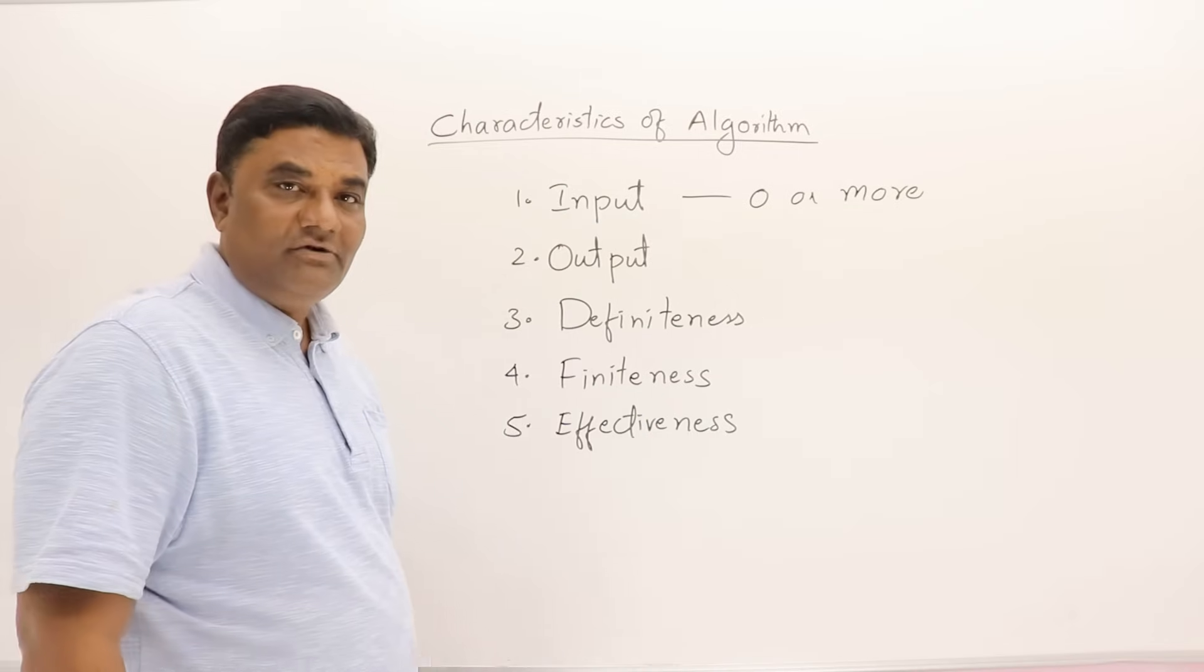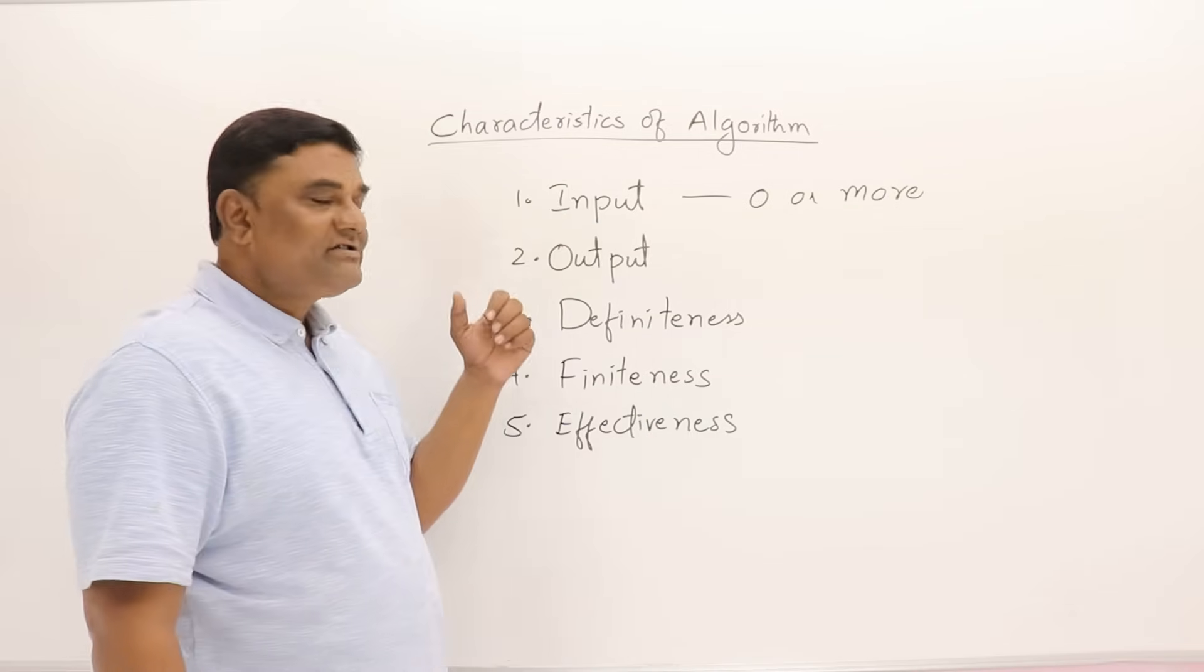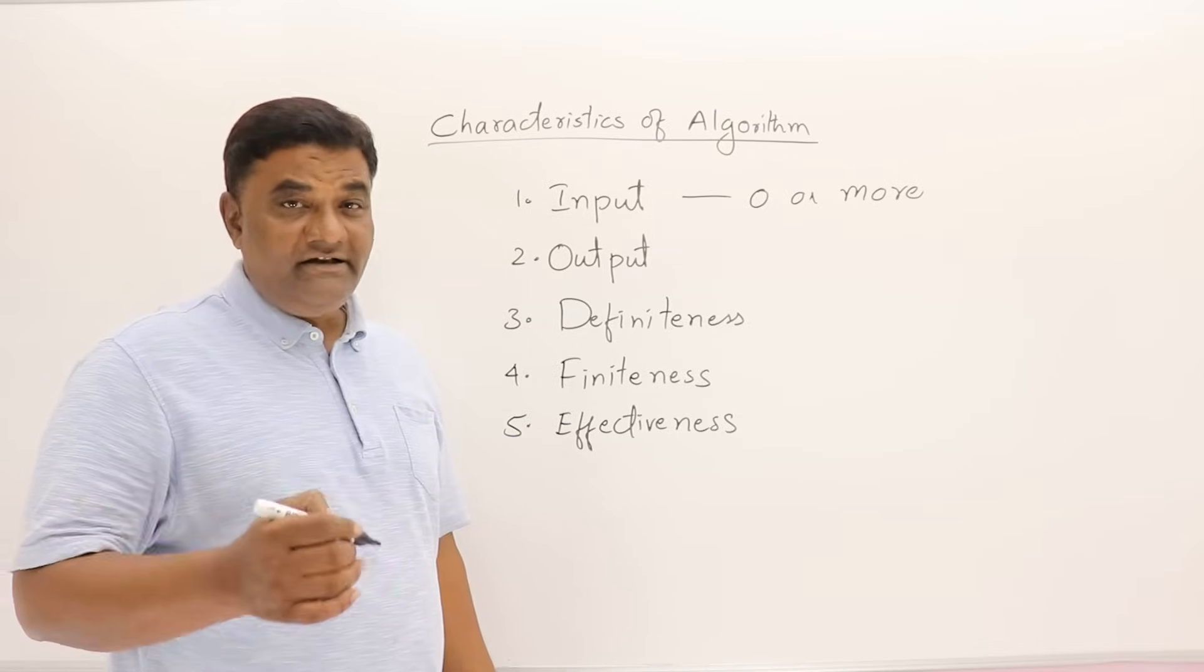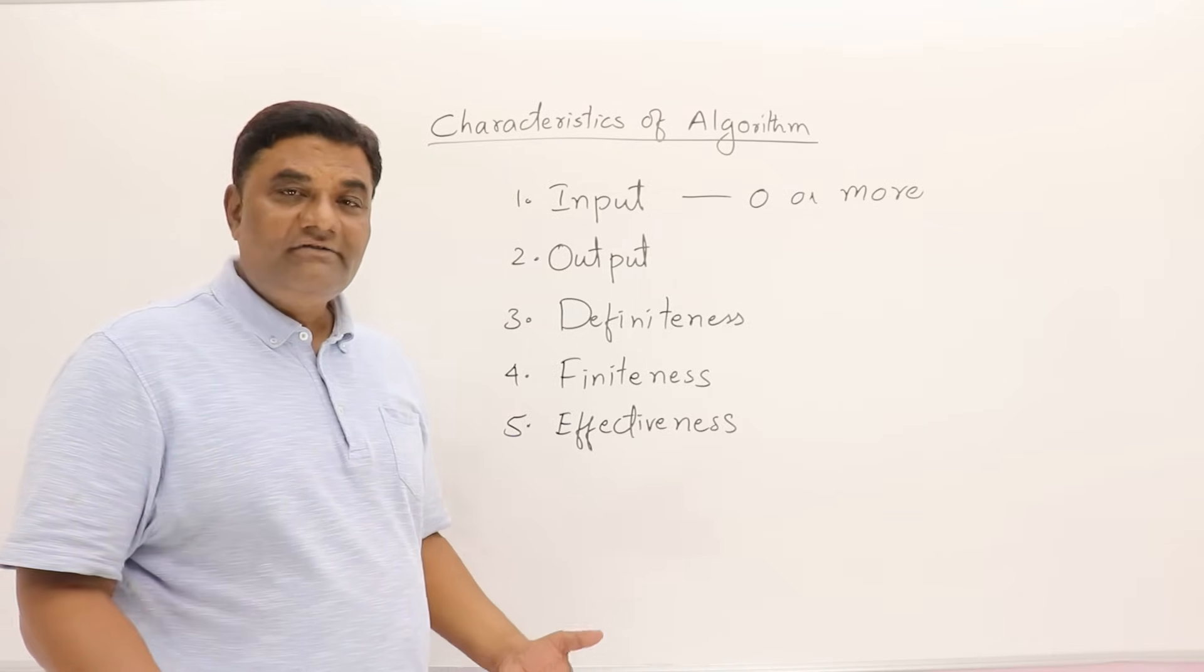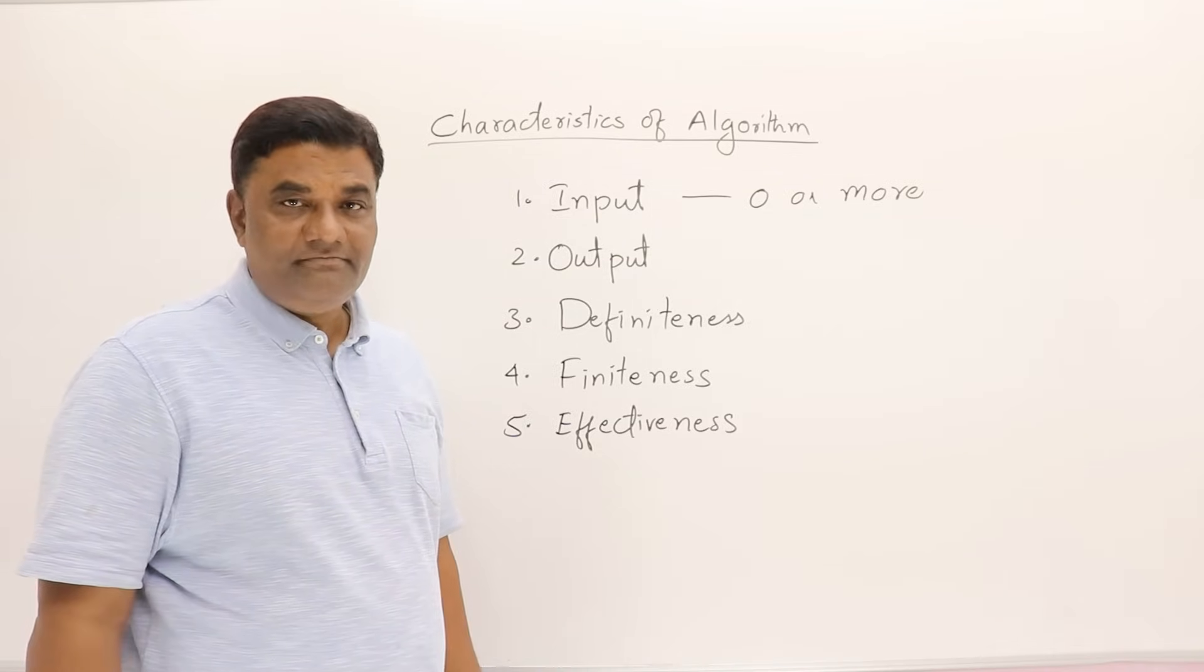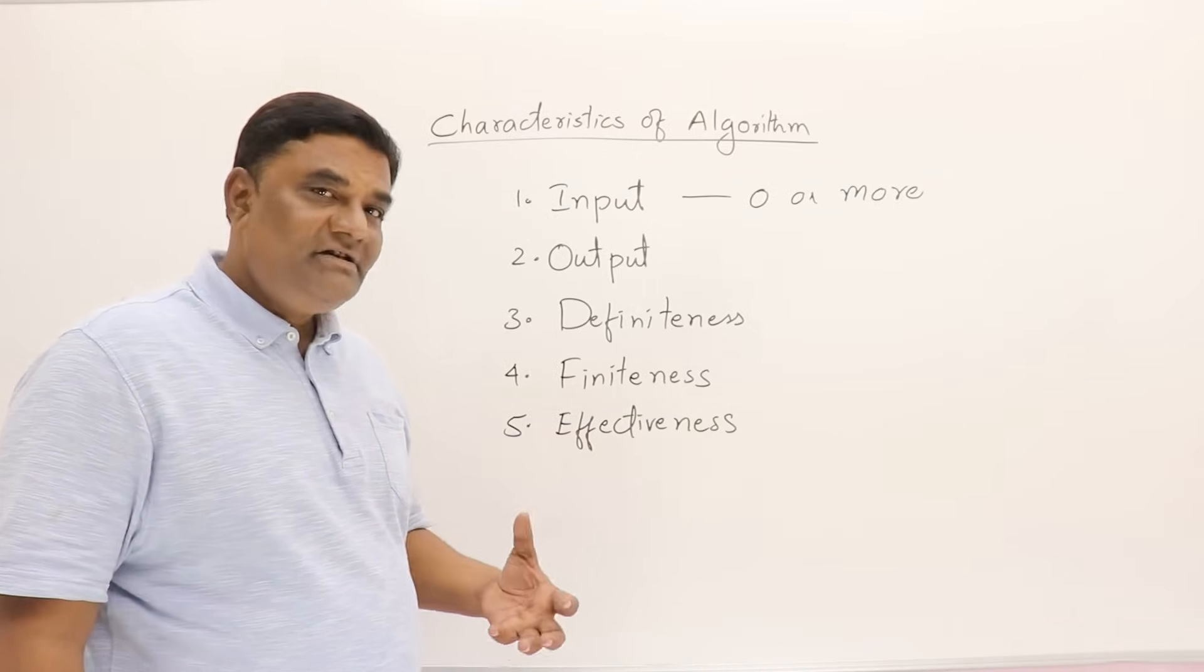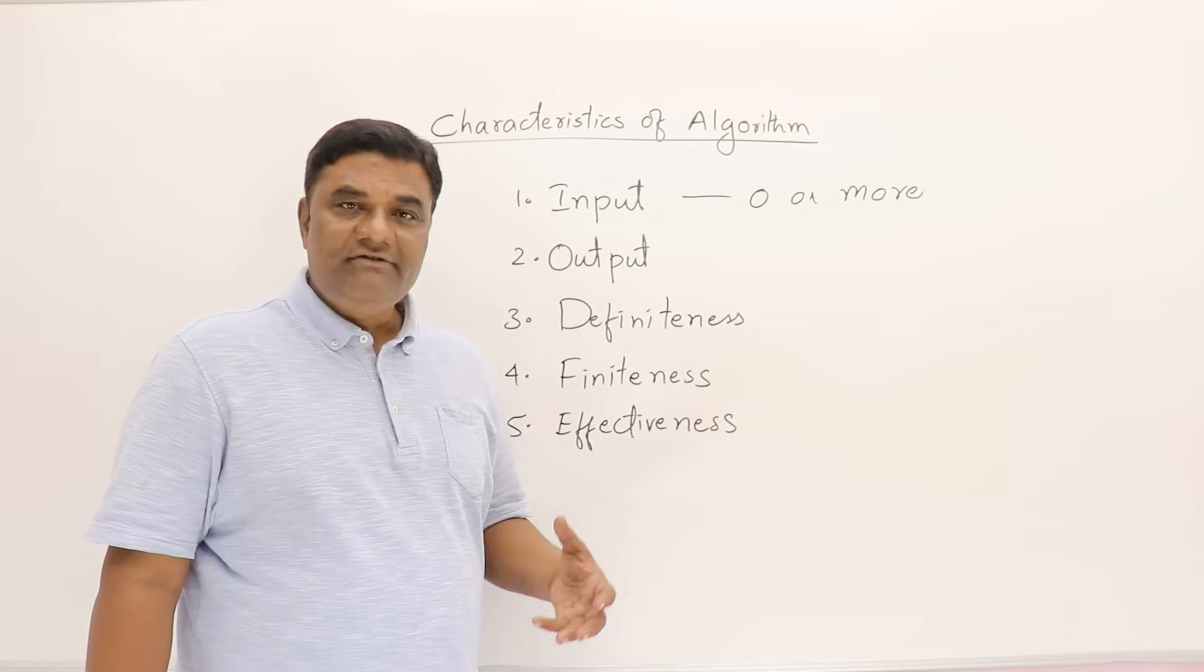Next, output. An algorithm must generate at least one output. Otherwise, there's no use in writing an algorithm. It must generate some result. Imagine it like a C language function.